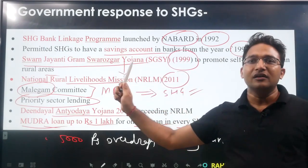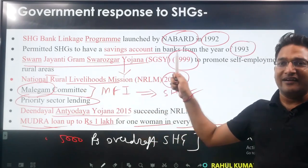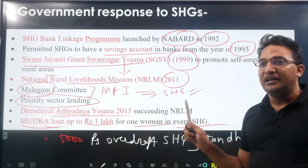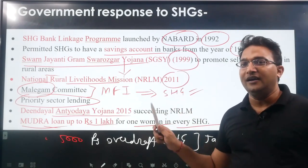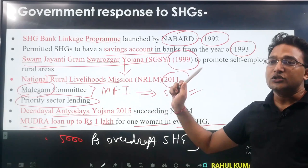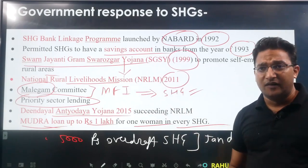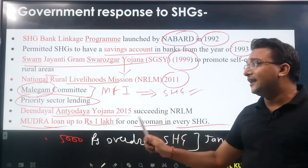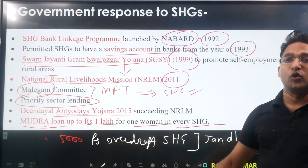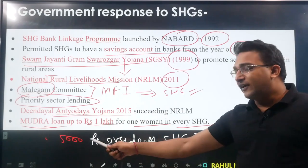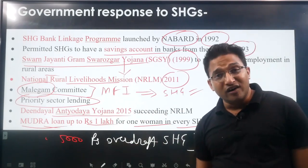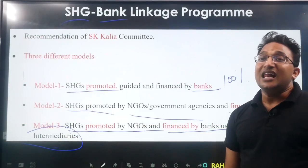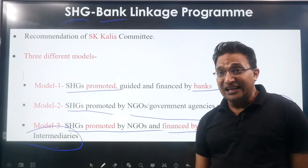In 2011, the National Rural Livelihoods Mission was launched. The Malikam Committee recommended that for microfinance building in India, self-help groups are very important. Priority sector lending is also given to self-help groups. The Deen Dayal Antyodaya Yojana of 2015 and the Mudra loan of up to rupees 1 lakh for women were introduced. In every self-help group, 5,000 rupees are given as overdraft for general account holders who are self-help group members.